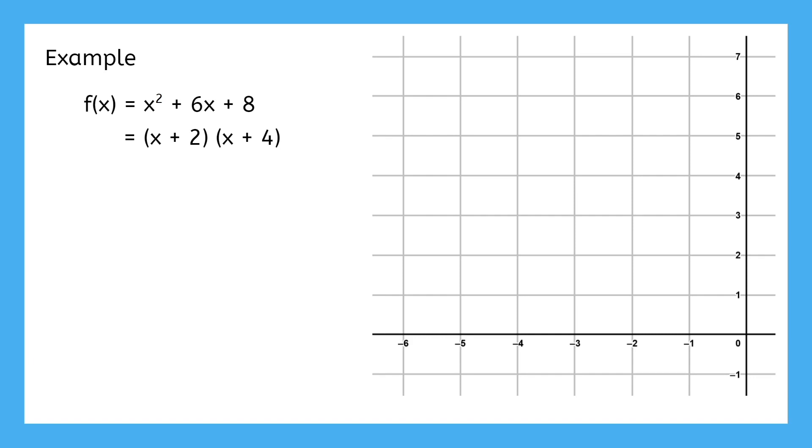If we set each factor equal to zero and solve, we get -2 and -4 for the roots. But how do we graph roots? Well, remember what roots are, the values that cause the function to output zero. That means if we input -2, the output will be zero. And if we input -4, same thing happens. Have you figured it out yet? Roots tell you where the x-intercepts are, so graphing them is as easy as plotting points on a number line.